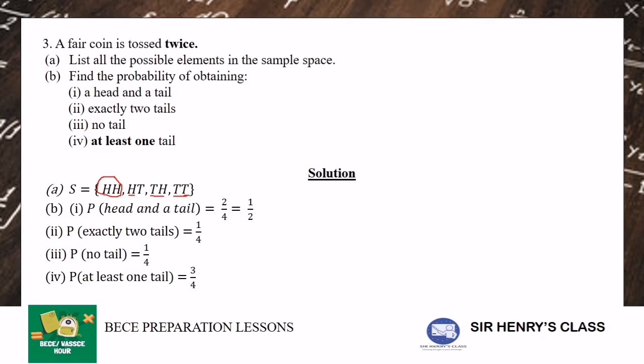No tail. Which of them has no tail? It's this. The head has no tail. So it's 1 out of 4. At least one tail. At least means greater than or equal to. So it's greater than or equal to one. So one. So this has one tail. One tail, two tails. So 3/4.